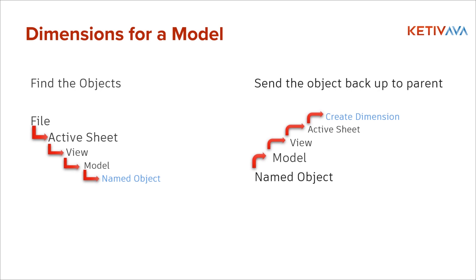Before showing the code, let me give a high-level overview. To get at and dimension these objects there are a few steps. We have to start at the file level, find the active sheet, look for the specific view that the model is on, and once we find the model we look for that named object. Then once we have that edge, we have to promote it backwards — from model to view, then from view to active sheet — and once it's at the sheet level we can create the dimension.